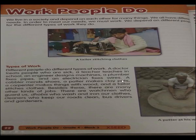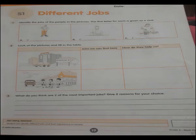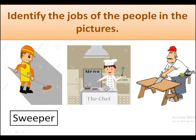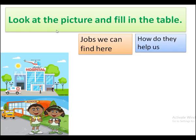Now let's complete our first sheet of this block — Different Jobs — which is on page number 19. The first question is: identify the jobs of the people in the picture. The first picture is of a sweeper. The second picture shows a boy cooking food — we call him a chef.